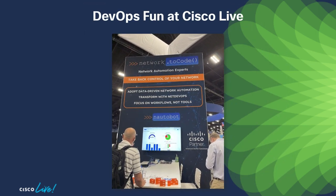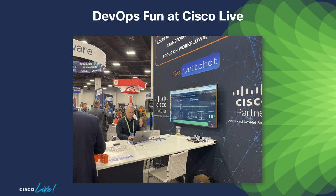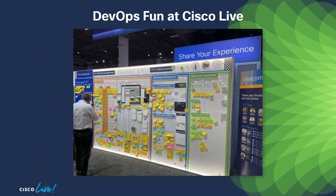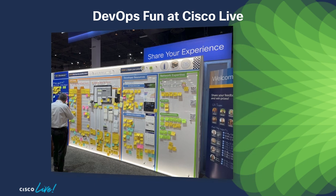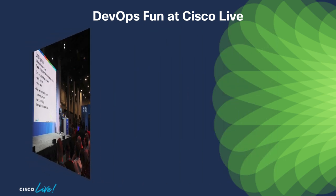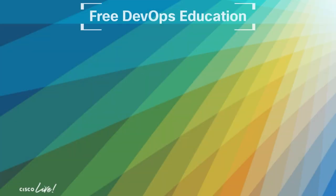Cisco partners showed us how to adopt data-driven network automation workflows. NetBox, from Network to Code for example, is a network source of truth that facilitates network automation. An important part of the DevOps lifecycle is the feedback phase, and the DevNet developer relations team showed us how to put that into practice as they elicited customer wants and needs. Developer advocates in the DevNet zone provided deep insight into a core tenet of DevOps: the CI/CD pipeline.